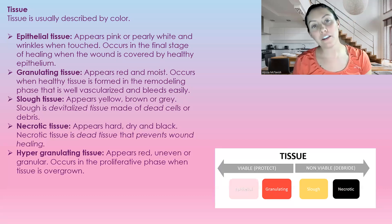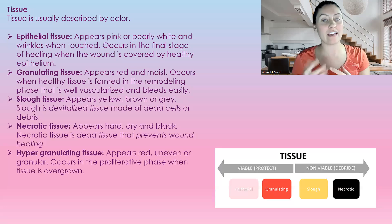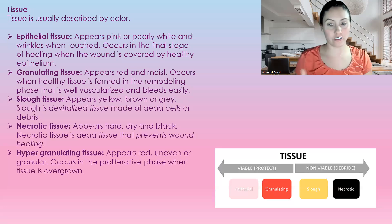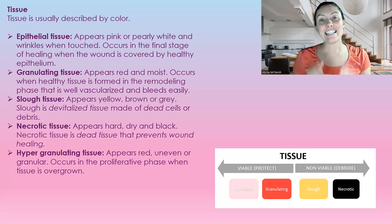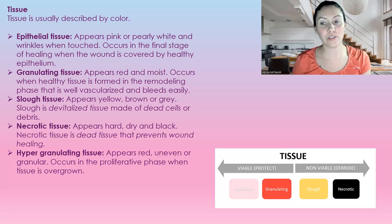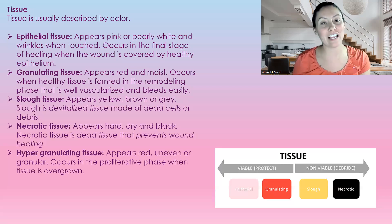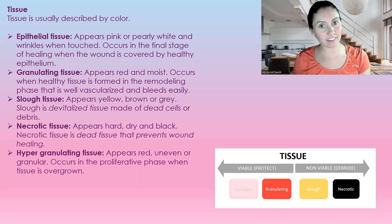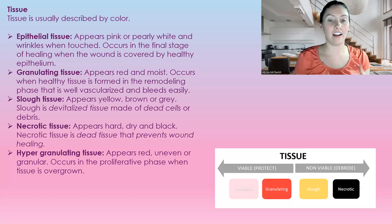Slough tissue can appear as yellow, brown, or gray — different colors. Slough is devitalized tissue, meaning there is no blood flow to this area. It is made of dead cells or debris, so we have to remove it with one of the debridement methods.